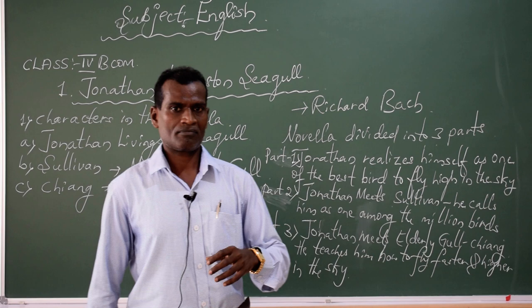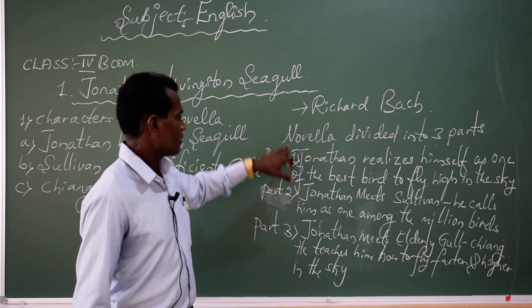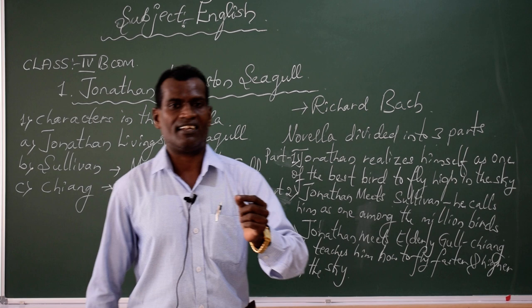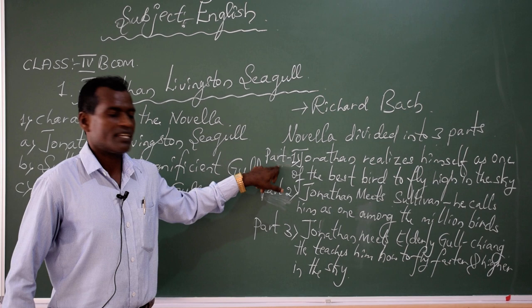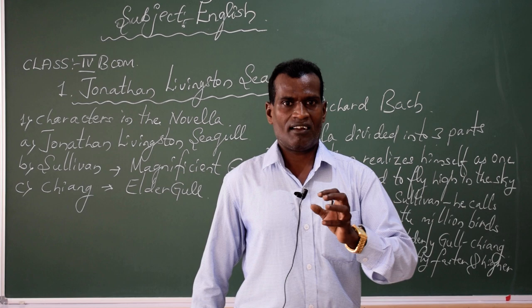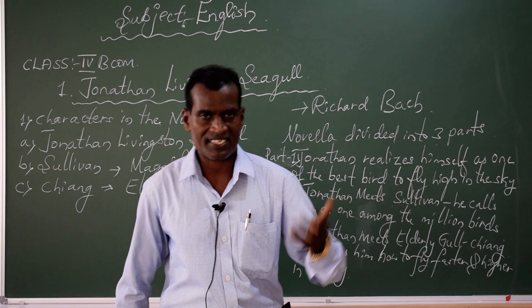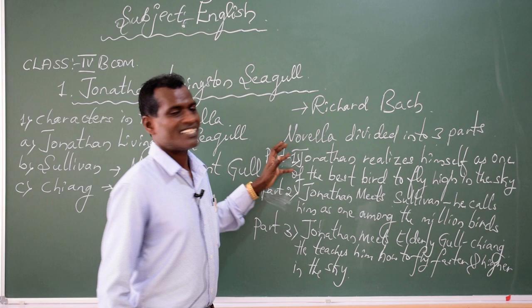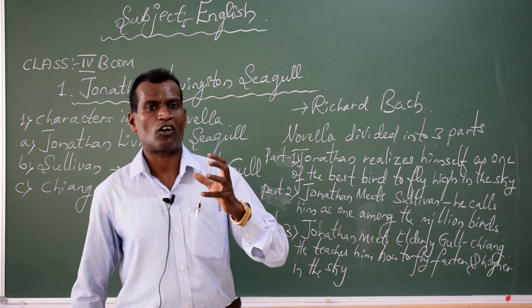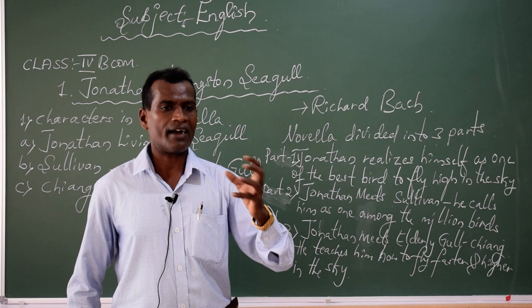The entire novella is divided into three parts. Part one describes about how Jonathan Livingstone Seagull attains how to fly faster and higher in the sky. At the same time, Jonathan is going to meet Sullivan. Sullivan and the rest of the other birds are not practicing and are not flying so fast in the sky. But by looking at Jonathan, the rest of the birds in the flock are going to appreciate how he has got the extraordinary capability and stamina to fly higher and faster.